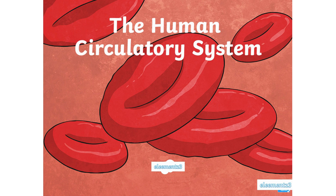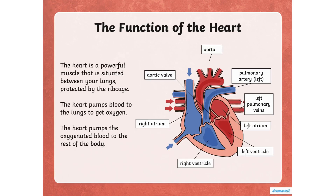Welcome to Element Z3: The Human Circulatory System. The function of the heart: the heart is a powerful muscle situated between your lungs, protected by the ribcage. The heart pumps blood to the lungs to get oxygen, then pumps the oxygenated blood to the rest of the body.